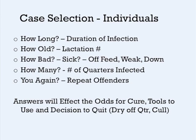For case selection, key questions are: how long has the infection been there (earlier is better), how old is the cow (older cows have more established infections), how sick is she (toxic cases can use flunixin/Banamine with a prolonged withhold — the cow stays organic), how many quarters are affected, and have treatments been tried before. Multiple affected quarters or recurring Staph aureus may mean the cow needs to be culled.